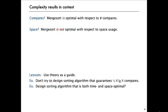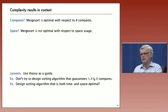Now, you have to take these results in context. Really what we proved is that merge sort is optimal with respect to number compares. But we already know that it's not optimal with respect to space usage. Merge sort uses extra space proportional to the size of the array it has to sort.